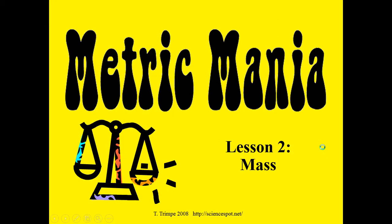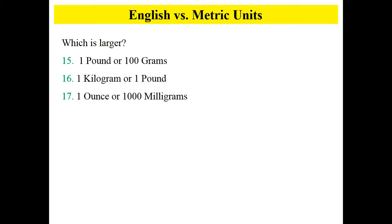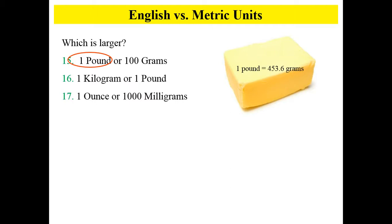So we've talked about metric length. Now we're going to discuss metric mass. Let's compare the English units that we're familiar with to the metric units. Which is larger: one pound or 100 grams? In this case, one pound is much larger than 100 grams, because a pound has 453.6 grams in it.